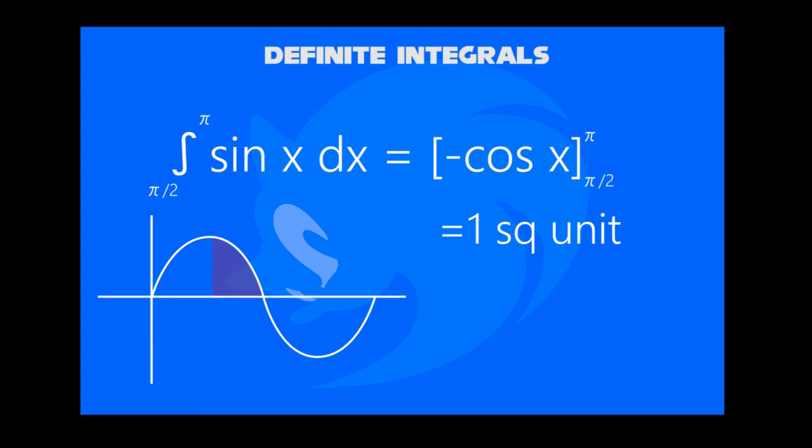When you solve this, we get minus cosine x from pi over 2 to pi. And then we get 1 square unit. We can now shade this part.